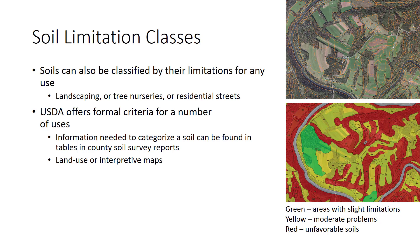The USDA offers formal criteria for a number of uses, and the information needed to categorize the soil can be found in tables in county soil survey reports. Land users can readily transfer the results of soil ratings for an area onto a soil map to graphically reveal lands suitable or unsuitable for various purposes. We might call these land use or interpretive maps. On the soil map, mapping units are colored in — often with green for areas with slight limitations, yellow for those with moderate problems, and red for unfavorable soils.